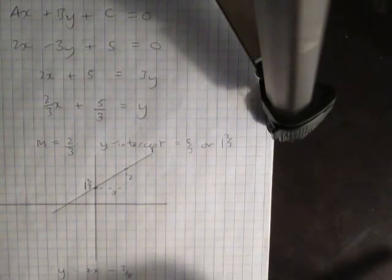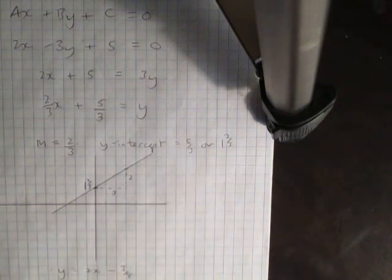So here we're looking at equations of lines. This is ax plus by plus c equals 0. This is called the standard form of an equation of a line.